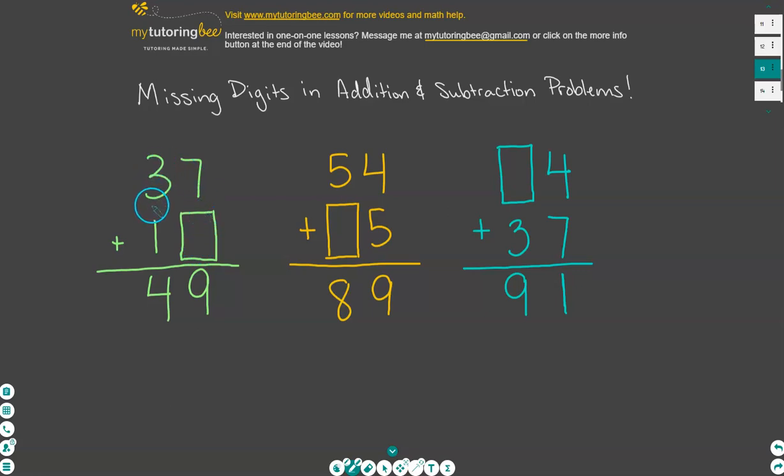And then work your way over to the 10's place. Now a lot of people might try the guess and check method, where you can just enter in numbers here and add it up and see if it would work for this particular problem. So if I guessed the digit 1, 7 plus 1, well that equals 8, not 9, so I know that that's not it.